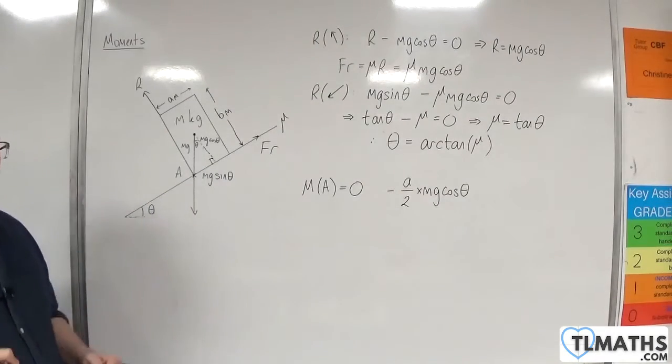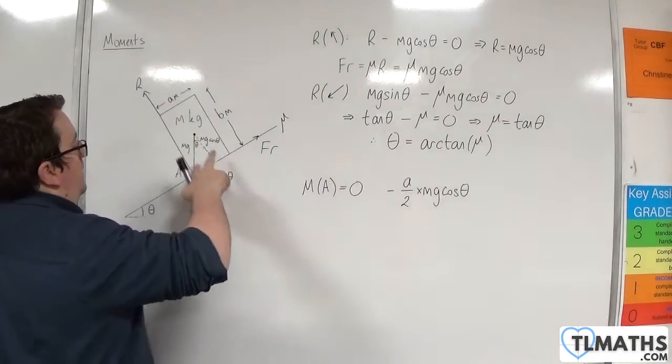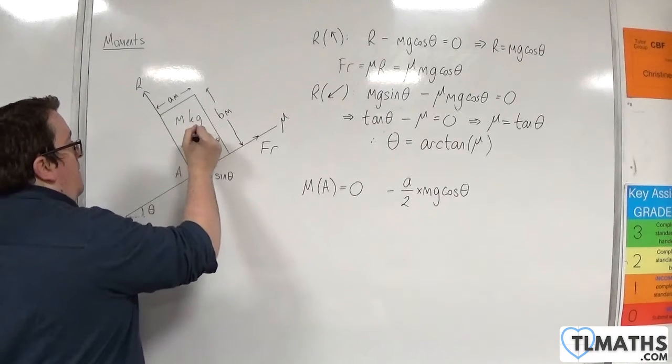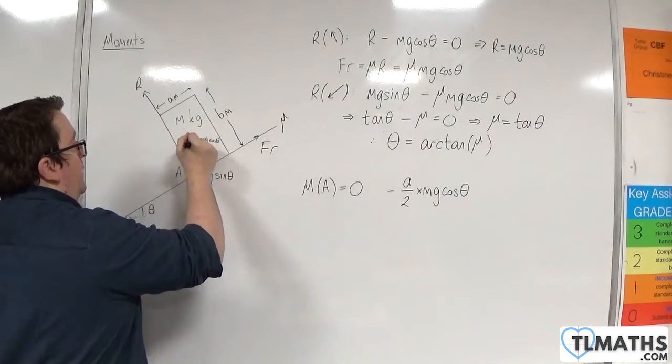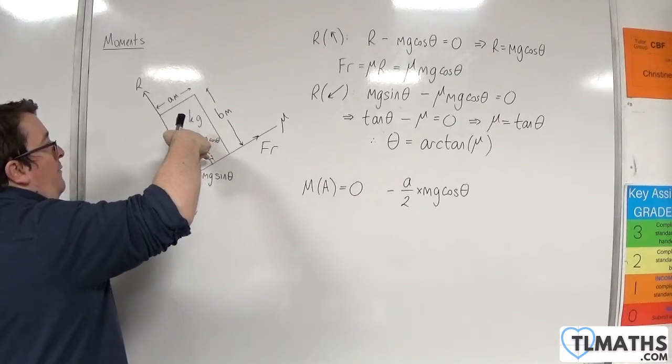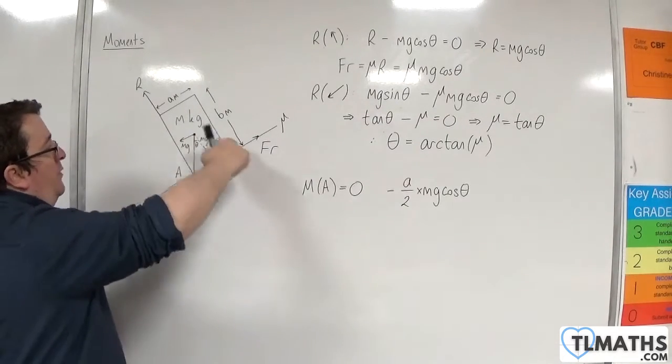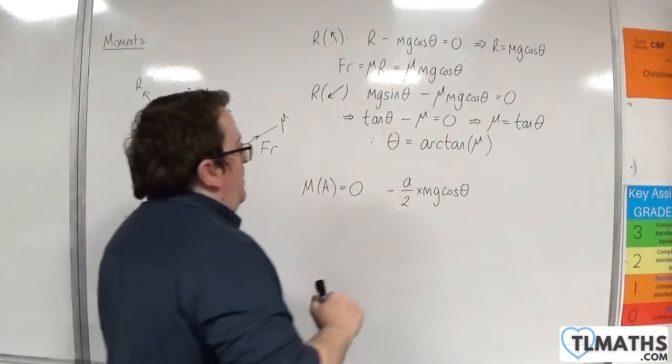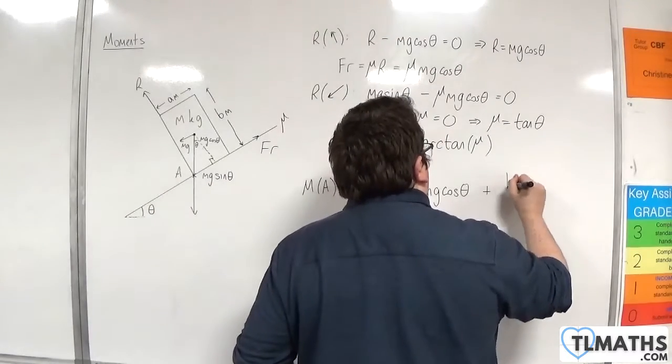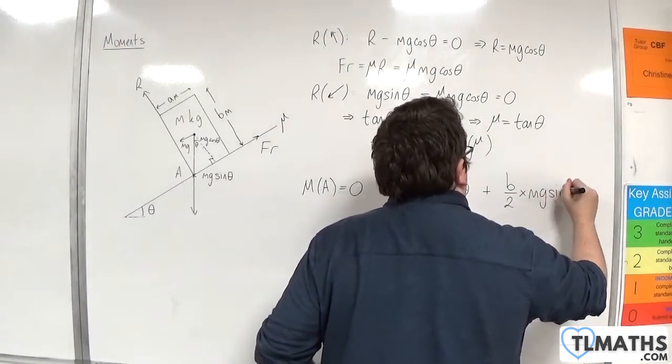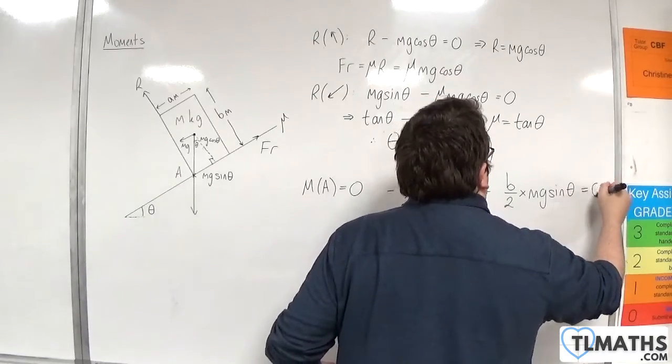Now as for the mg sine theta, then you can think of it as going from that point. Remember, it's projecting through that point. And so we're B over 2 away from it, and that's going to be going around in an anticlockwise motion. So that would be positive. So plus B over 2 times mg sine theta, and that's got to be equal to zero.